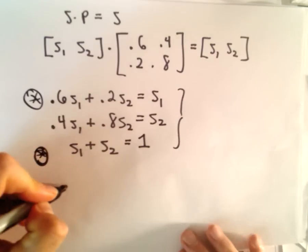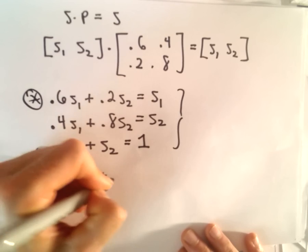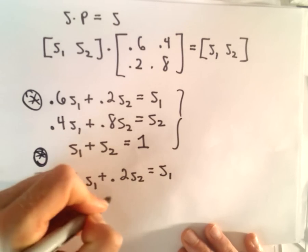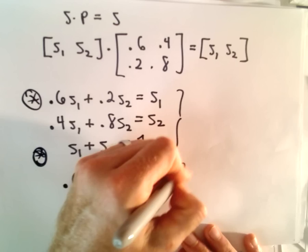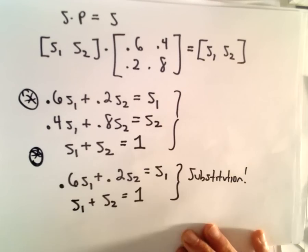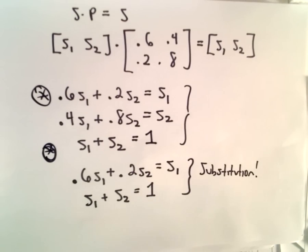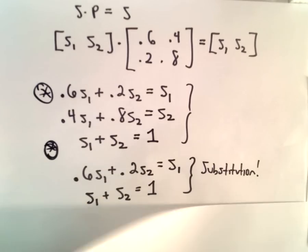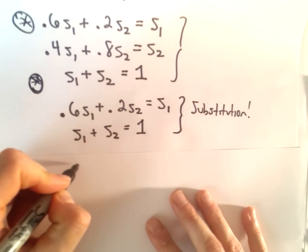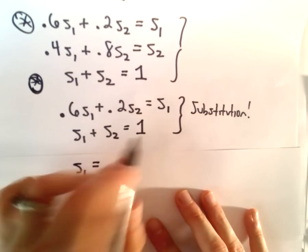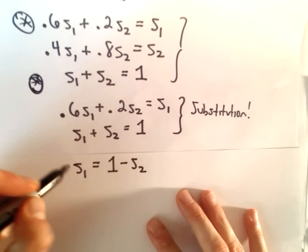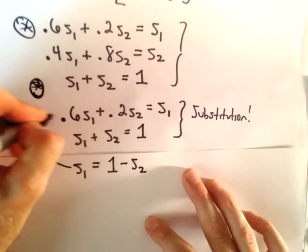I think I'm going to simply solve this using substitution. You could use elimination by addition, row reduction, or whatever technique you want. I'm going to take my second equation and solve for S₁. So if we subtract S₂, we'll have S₁ equals 1 minus S₂, and I'm just going to substitute that back into the first equation.